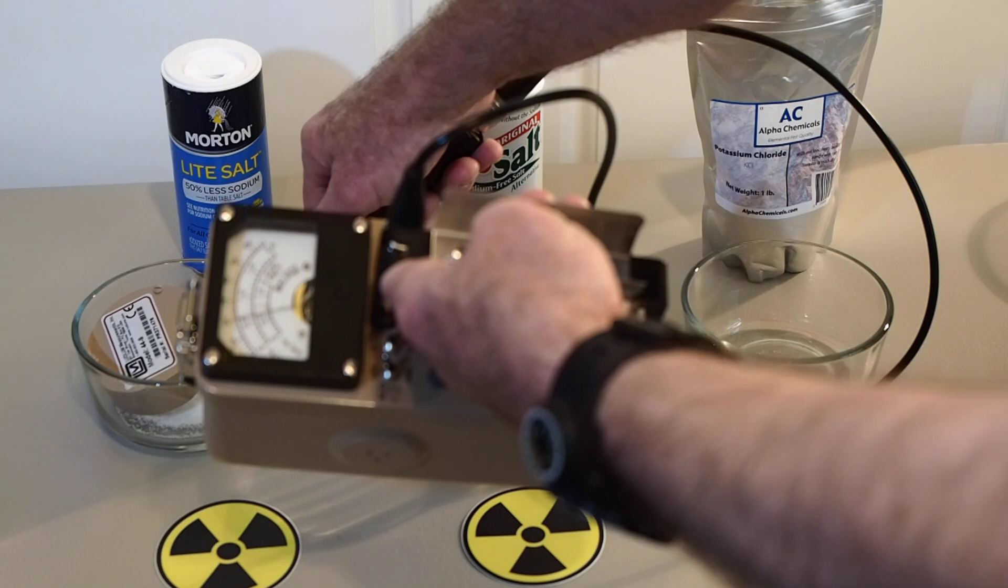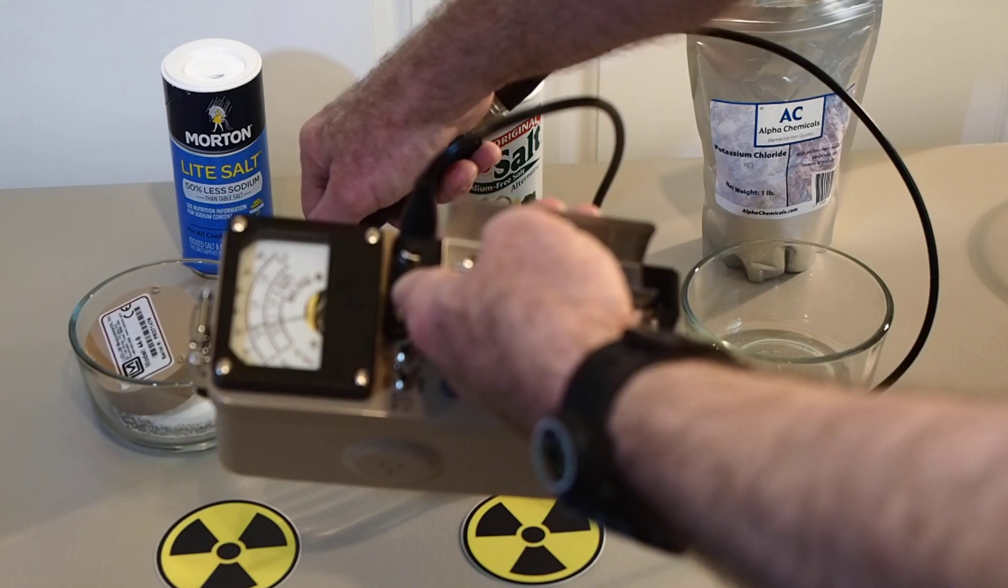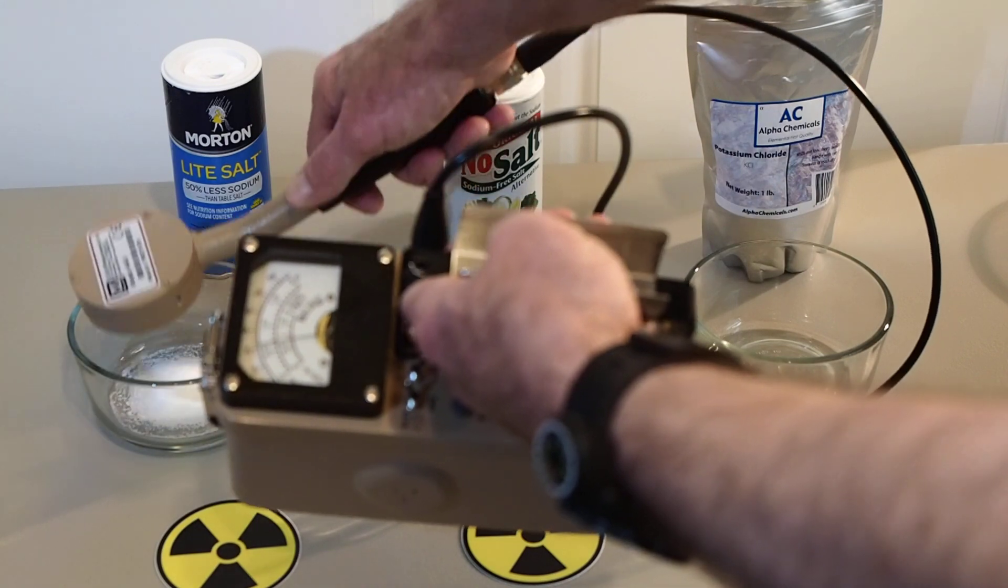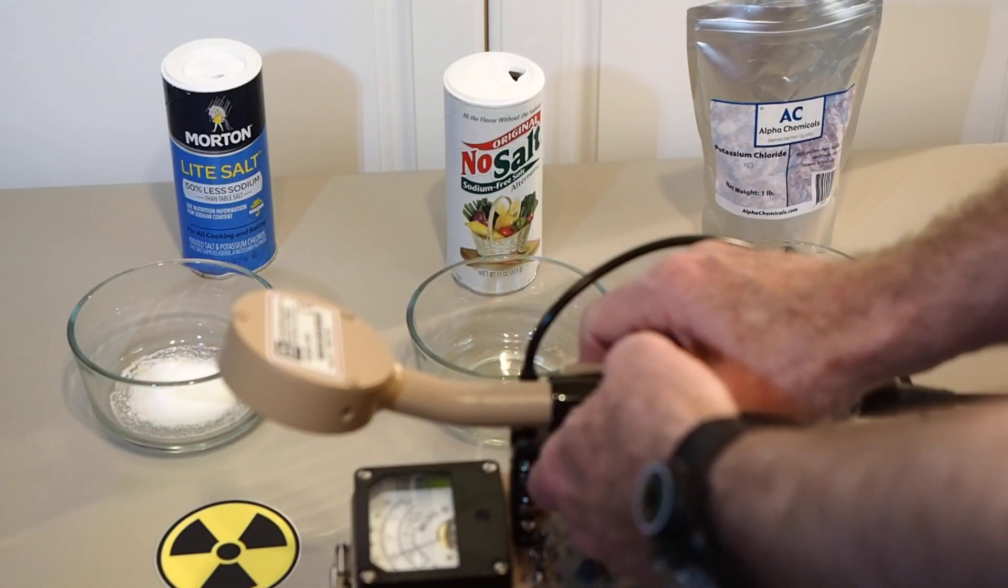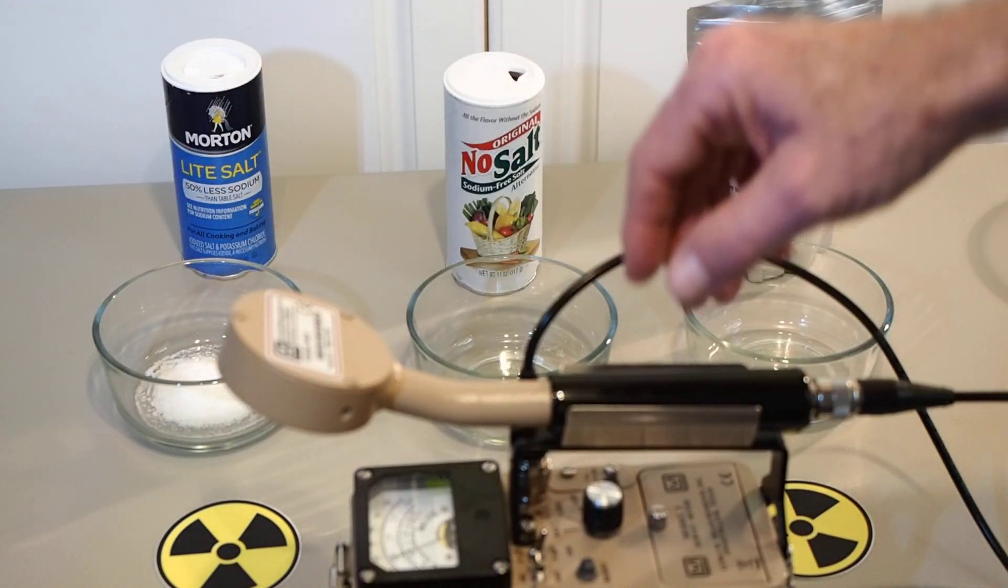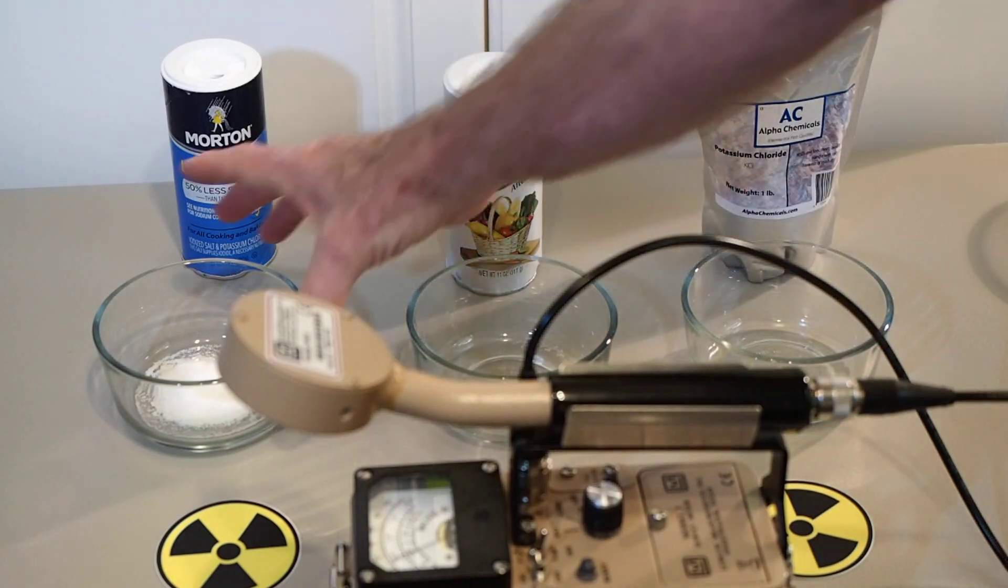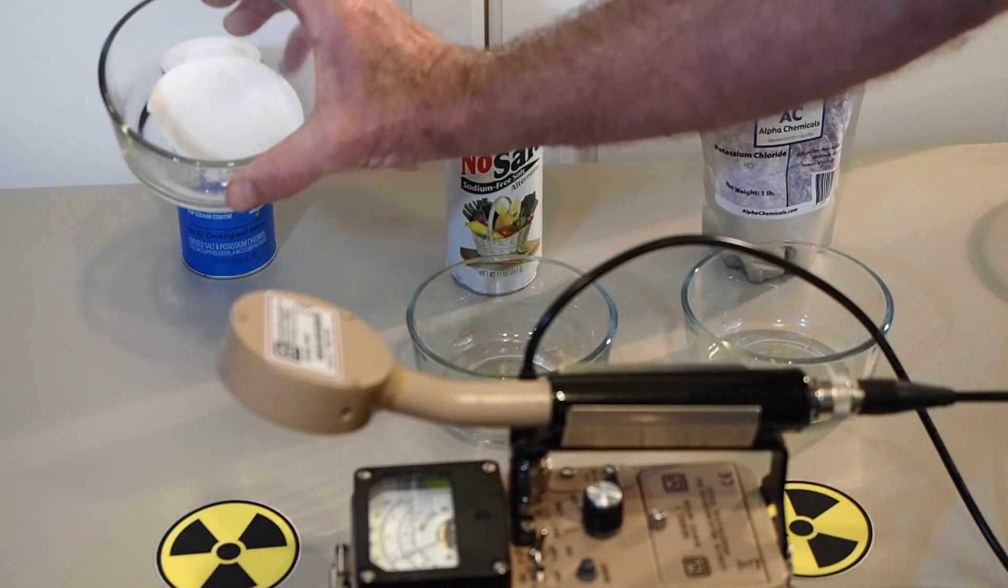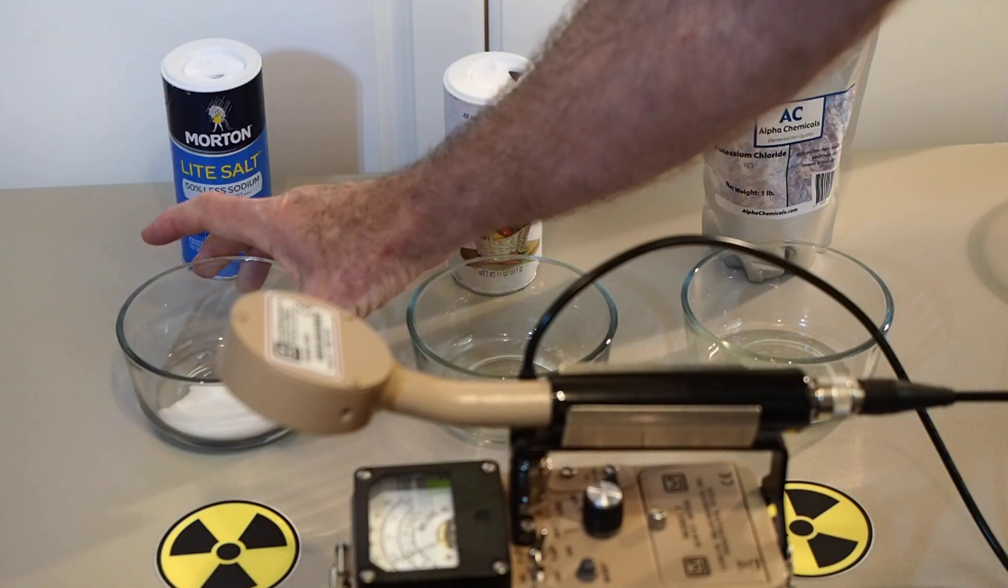Okay, with the amount that I poured into the bowl, we're maxing out at about 200 counts, 200 counts per minute. So we had a background reading of about 140 counts per minute. So if we subtract that out of the 200, we're getting about approximately 160 counts per minute for the amount that's contained in that bowl of the Morton light salt.